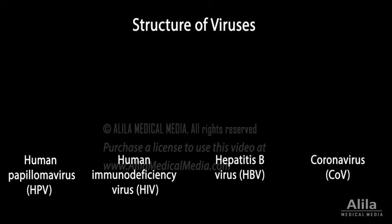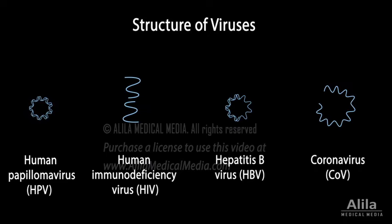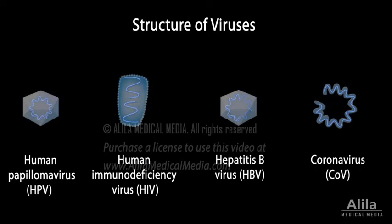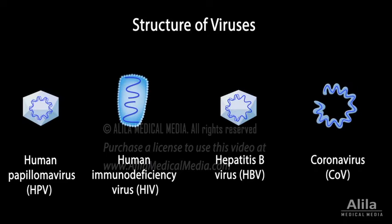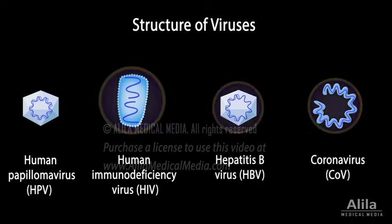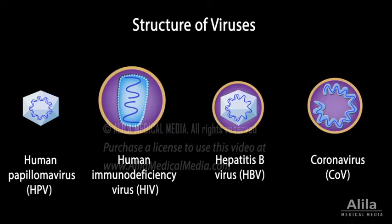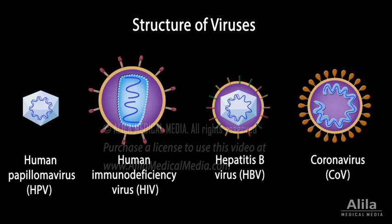A virus is composed of a genome — DNA or RNA — wrapped inside a protective protein coat called a capsid. Most animal viruses also have an additional lipid membrane called an envelope, with protein spikes that serve to attach to host cells.